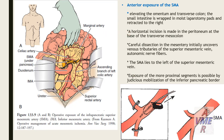Through exposure of the superior mesenteric artery: first, the omentum and transverse colon are reflected, and the small intestine is wrapped and retracted to the right. A horizontal incision is made in the peritoneum at the base of the transverse mesocolon. Careful dissection of the mesentery uncovers the venous tributaries of the superior mesenteric vein and autonomic nerve fibers. Upward retraction of the inferior border of the pancreas may also be required. The superior mesenteric artery lies to the left of the superior mesenteric vein. After clamping, transverse arterial embolectomy is performed, with intra-arterial heparin or thrombolysis infusion, followed by completion angiography and balloon angioplasty if required.